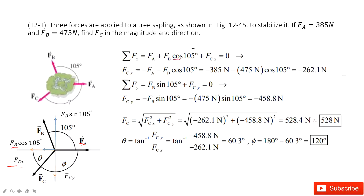This component is negative. If you check it, cosine 105 degrees is negative, so zero will keep the positive sign there. From this we can get the value of Fcx.